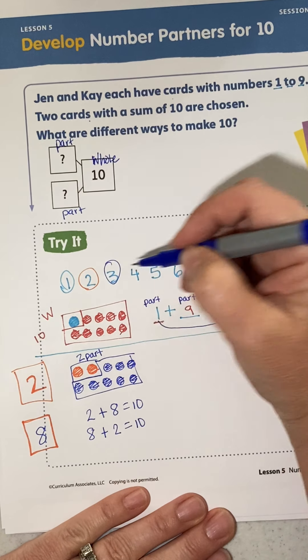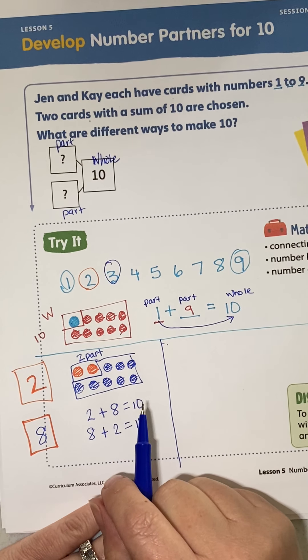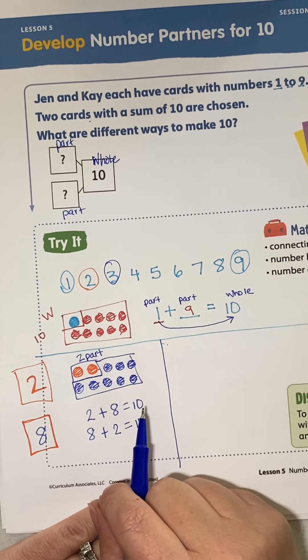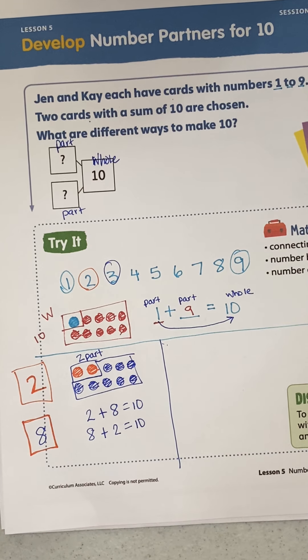I want you to try the number 3 and see what the other partner for number 3 is. Then try the number 4 and see what the partner for number 4 is.